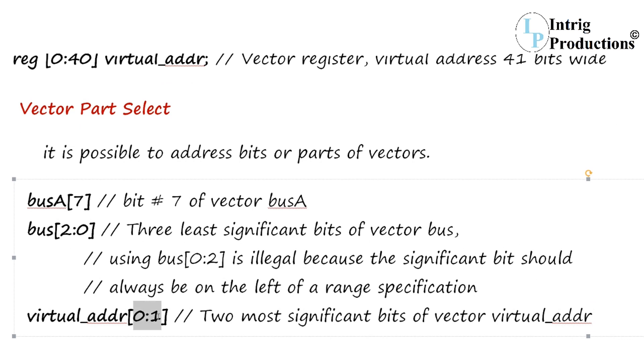So I directly take [2:0], that is we had declared previously [7:0]. In a similar fashion, the MSB should always be on the left and the LSB on the right, and now I am accessing only three bits of that variable.